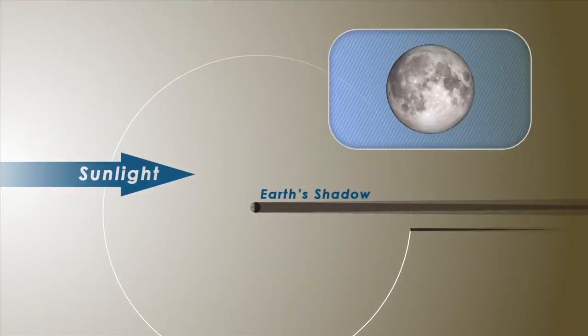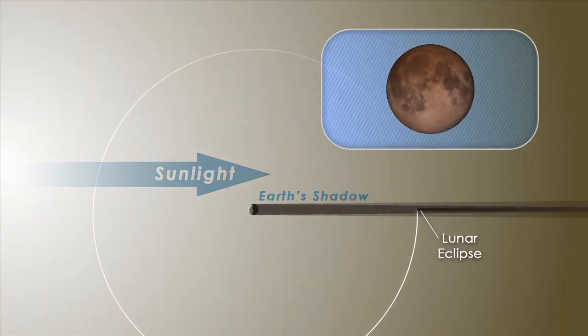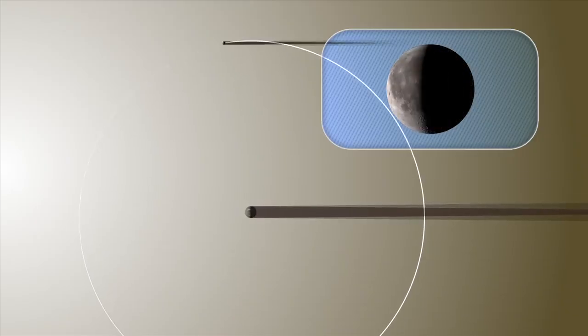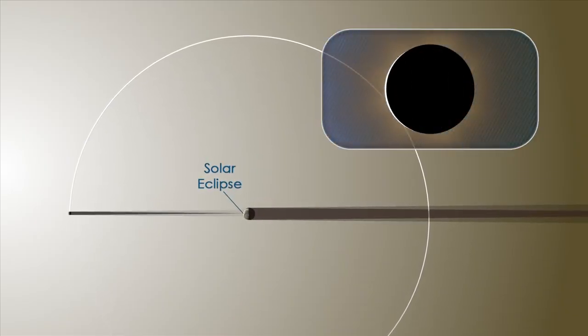A lunar eclipse occurs when the moon passes through the Earth's shadow, just as a solar eclipse occurs when part of the Earth passes through the moon's shadow.